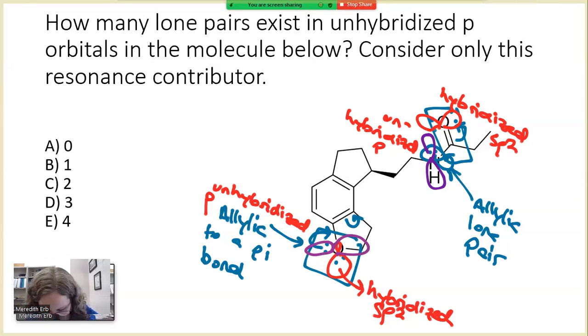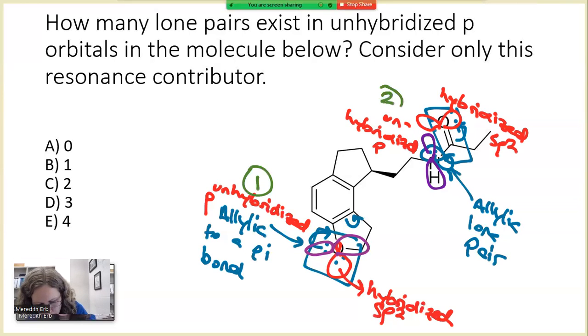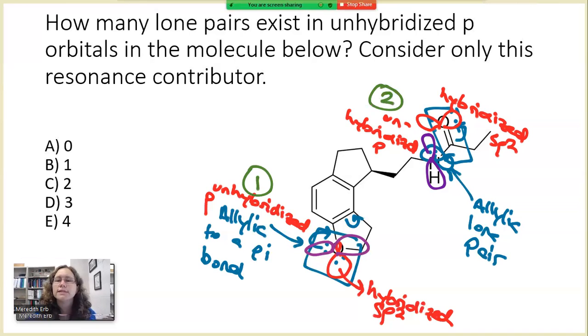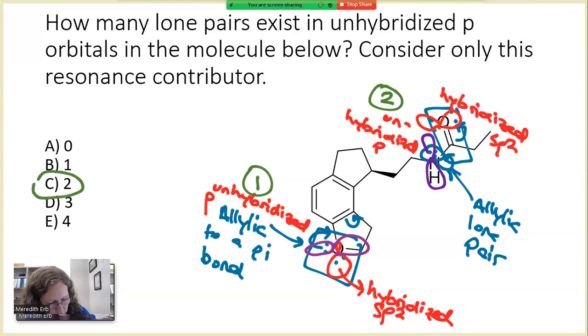If we count them up, we have one and two pairs that are in unhybridized p orbitals and can therefore participate in resonance. So the answer to this question should be C.